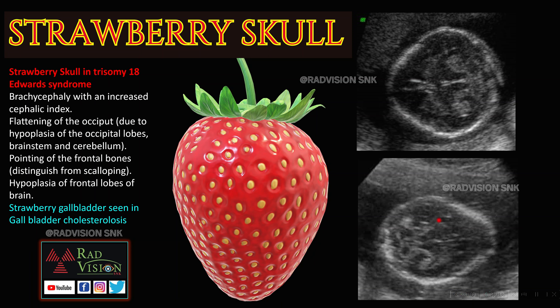This is classically the strawberry skull, seen in trisomy 18 or Edwards syndrome, where there is flattening of the occiput due to hypoplasia of the occipital bones, brainstem, and cerebellum, and pointing of the frontal bones due to hypoplasia of the frontal bones. This flattening of the occiput with pointing of the frontal bones mimics a strawberry — hence called strawberry skull. Also remember strawberry gallbladder, seen in gallbladder cholesterolosis.